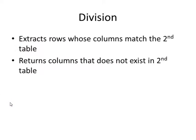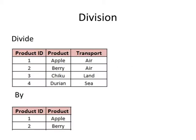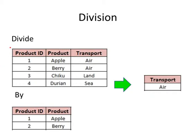The fourth operator is the division operator, where we actually extract the rows whose columns match the second table. Supposedly we have these two tables and we divide the first table by the second table — the result will be transport air. In the division operator, we are essentially looking for the common information between the two tables. In this case, the common rows are product ID 1 apple and product ID 2 berry, and the common transport is air. This is the result given by the division operation.